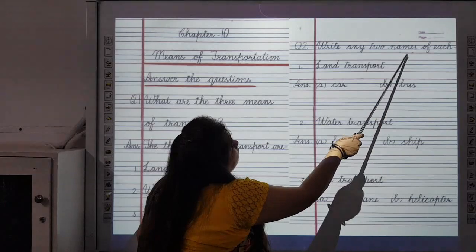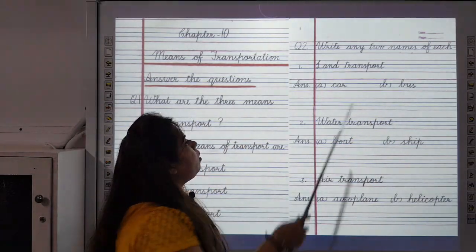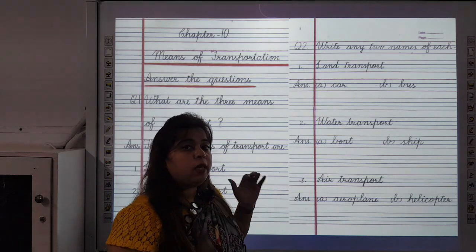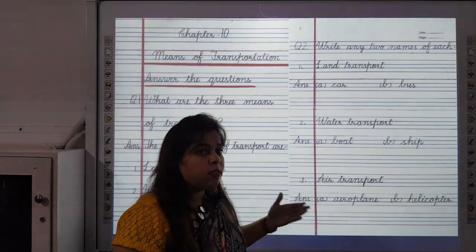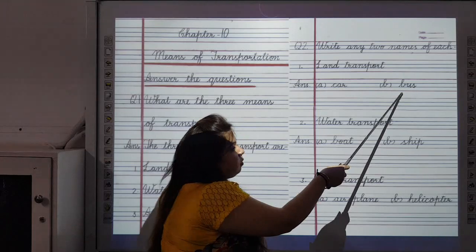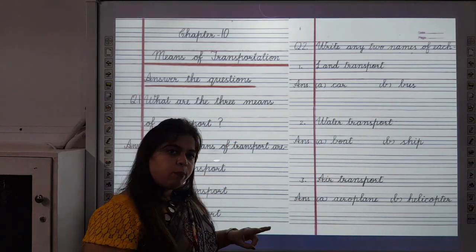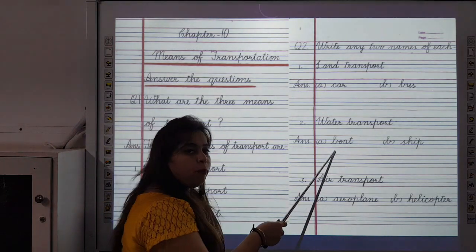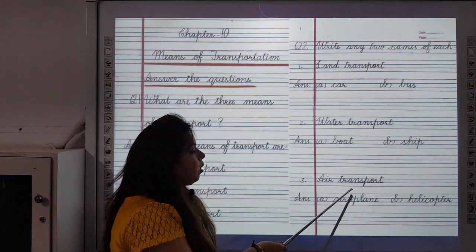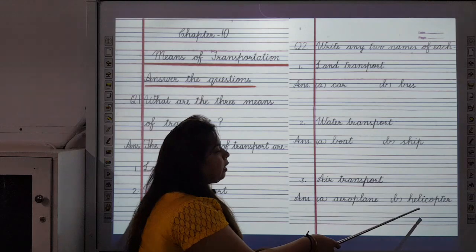Write any two names of each. Land transport — vehicles that run on land and on rails — examples: car and bus. Water transport — examples: boat and ship. Air transport — examples: aeroplane and helicopter.